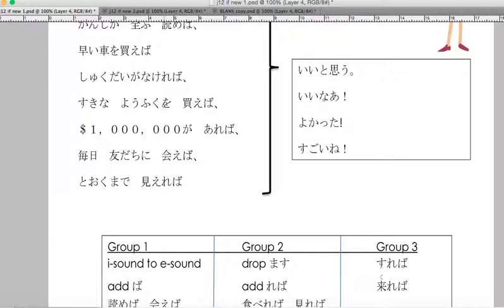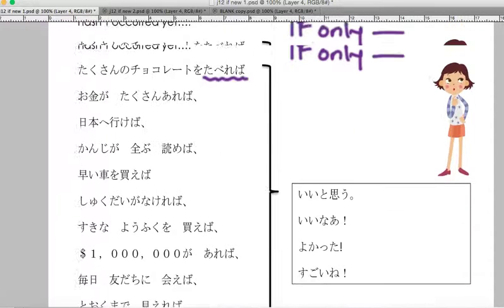If only I could buy the clothes I like, wouldn't that be great? If only I had a million dollars, that would be awesome. If only I could see my friends every day, I'd be happy. If only I could see far away, wouldn't that be good? So the whole main focus of this 'if' is on 'if only.'